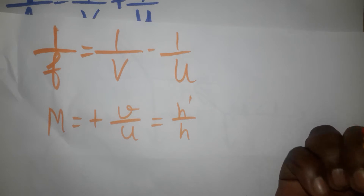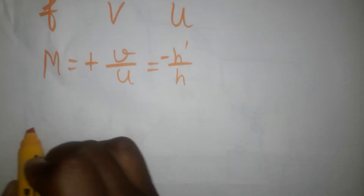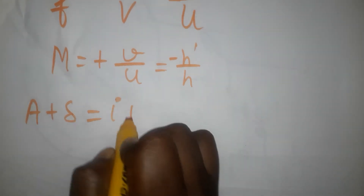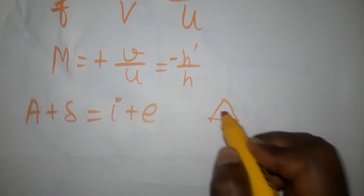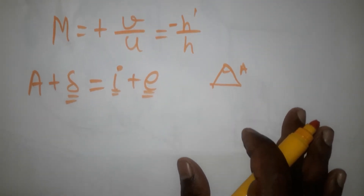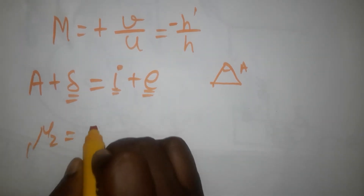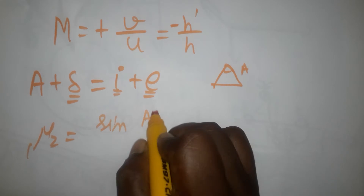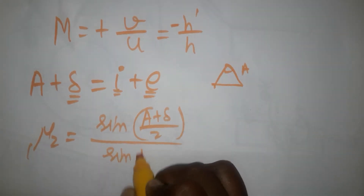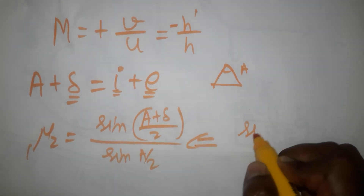Next is the prism formula: A + δ = i + e, where A is the angle of the prism, i is the angle of incidence, e is the angle of emergence, and δ is the angle of deviation. The refractive index n₁₂ = sin((A + δ)/2) / sin(A/2), which is derived from Snell's law: sin i / sin r.